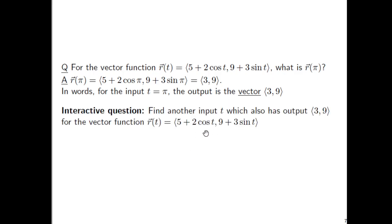Your interactive question is to answer this: Find another input t which also has the output being the vector (3, 9), using the same vector function.